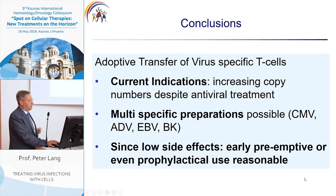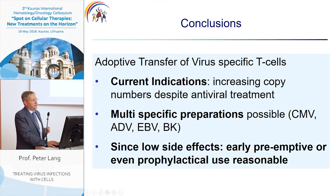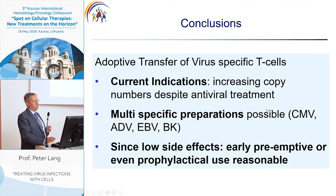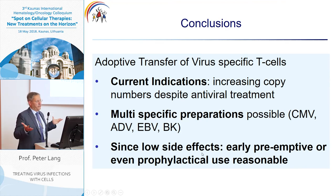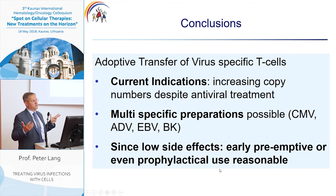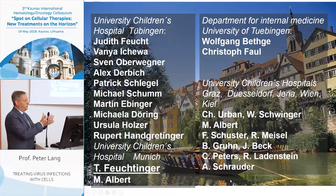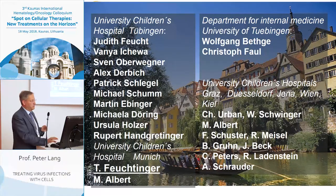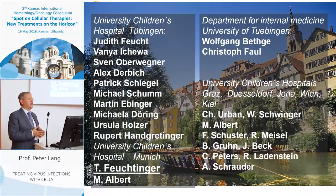The final conclusions: current indications for adoptive transfer of virus-specific T cells in our hands are an increasing copy number despite antiviral treatment. Multi-specific preparations — triple or even quadruple-specific T cells — are possible. Since we have observed very low side effects, an early pre-emptive or even prophylactic use might be reasonable. I would like to thank all my colleagues who contributed to this work, especially Tobias Feuchtinger, and thank you very much for your attention.